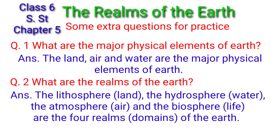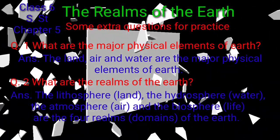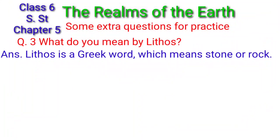Second question: what are the realms of the earth? The lithosphere, the hydrosphere, the atmosphere, and the biosphere are the four realms of the earth. Third question: what do we mean by lithos? Lithos is a Greek word which means stone or rock.